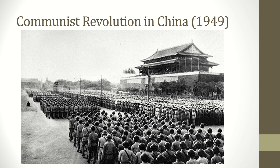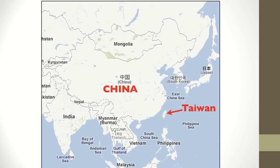In 1949, the Communist Chinese, led by Mao Zedong, took over power in China. Chiang Kai-shek and the exiled government went to what is known today as Taiwan. And so, from that time and still up to today, both governments claim to be the legitimate government of China.